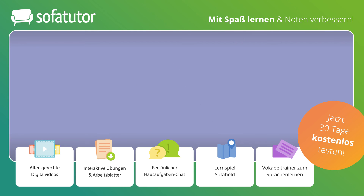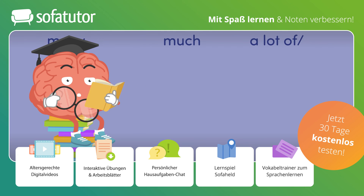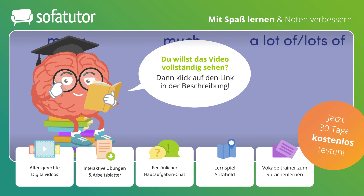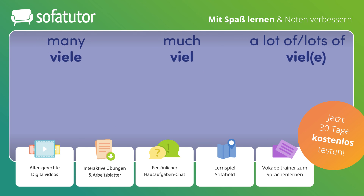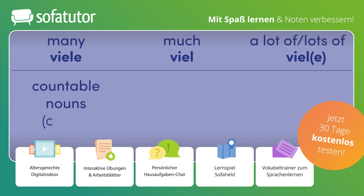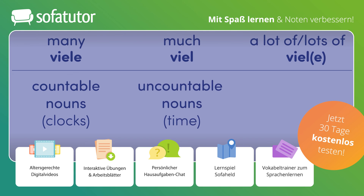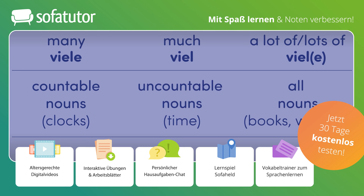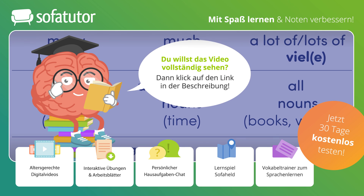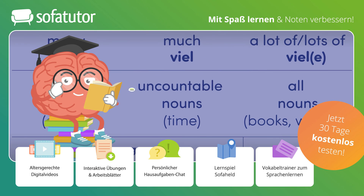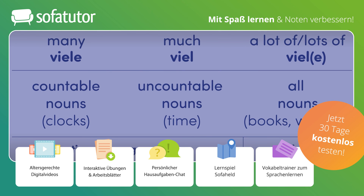Summary: Die Quantifier 'many', 'much' und 'a lot of' beziehungsweise 'lots of' haben alle die gleiche Bedeutung — sie geben an, dass von etwas viel vorhanden ist. 'Many' steht nur vor countable nouns. 'Much' vor uncountable nouns. Und 'a lot of' beziehungsweise 'lots of' vor allen Substantiven. 'Many' und 'much' kommen hauptsächlich in negativen Aussagen und Fragen vor, können aber auch in positiven Aussagesätzen verwendet werden, wenn sie hinter 'to', 'as' oder 'so' stehen. 'A lot of' oder 'lots of' kann in allen Sätzen genutzt werden.